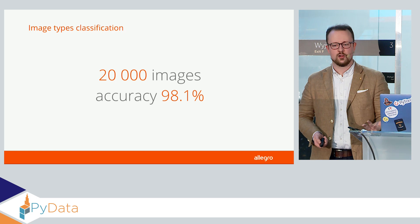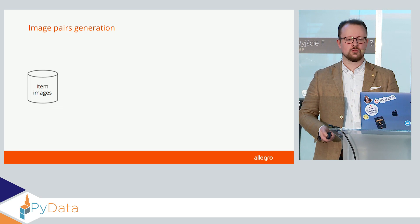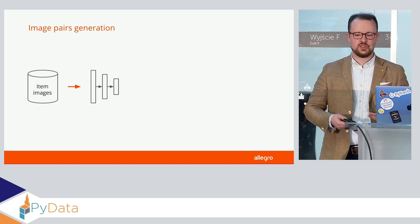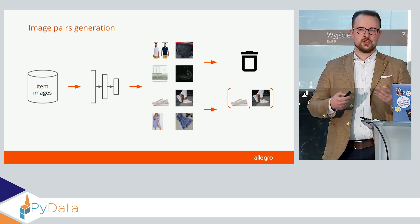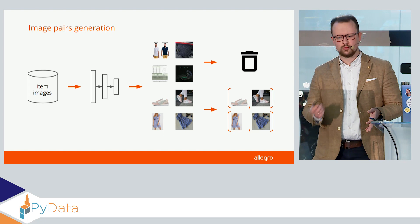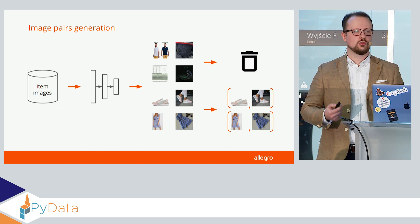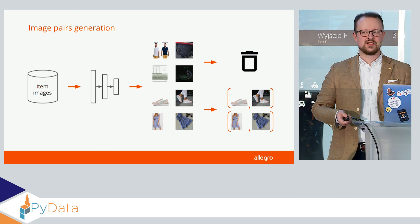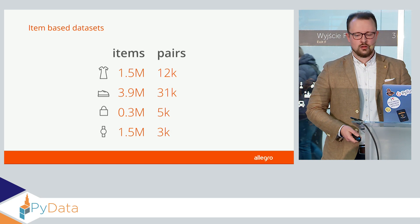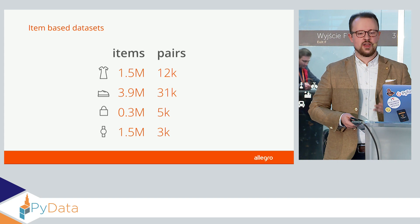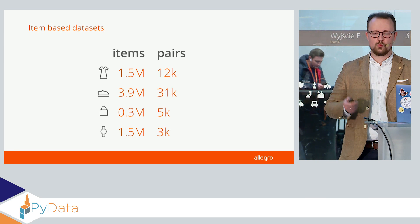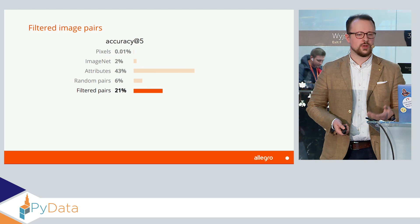Let's use that classifier to clean our dataset and see if it helps. We take all image pairs from offers, use the classifier to predict their type, discard junk categories, and from the useful types we create pairs — but we create them so they differ on the product-model vs. street-shop dimensions. This way, our model will hopefully learn about the product itself and not the background or the setting. This does reduce our dataset significantly: from one and a half million random pairs down to only 12,000 filtered pairs. But it works — we get 21% accuracy, way better than with random pairs.